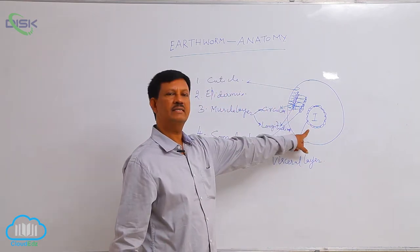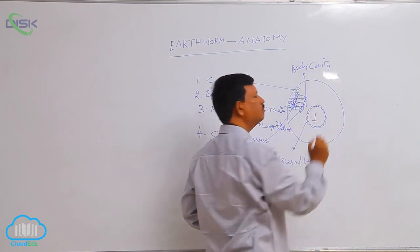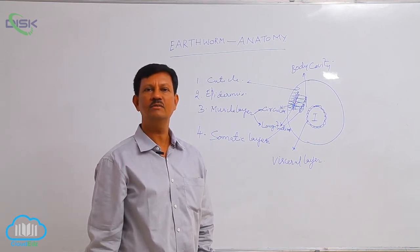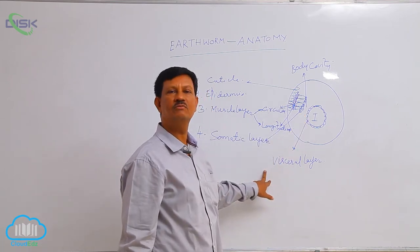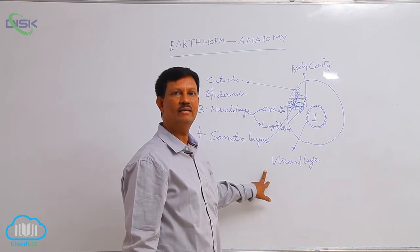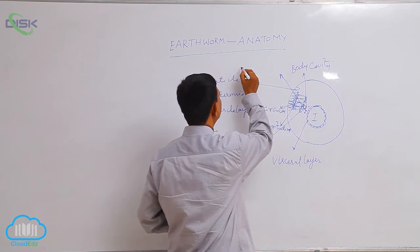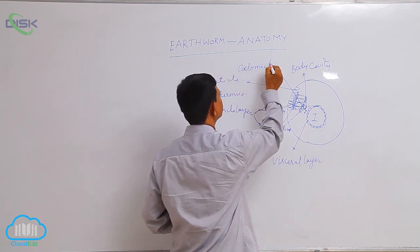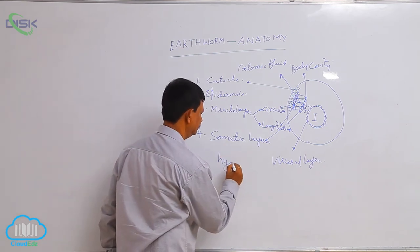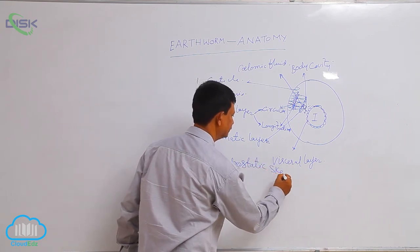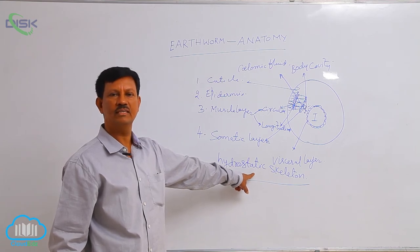In between the body wall and the alimentary canal, there is a cavity. This cavity is known as the body cavity, also called the coelom. It is a true coelom because the cavity is present between the somatic layer and the visceral layer, both of which are derived from the mesoderm. The true coelom first appeared in the annelid phylum. In the body cavity, a liquid-like substance is formed, known as the coelomic fluid. This fluid acts as a hydrostatic skeleton, which helps in locomotion.